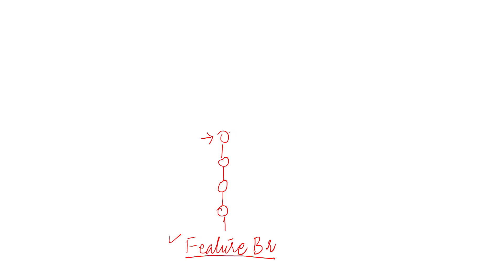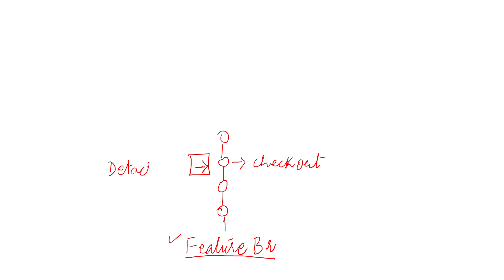Now, what is detached HEAD? For example, if we check out a specific older commit, the HEAD pointer will not be pointing to the latest commit — rather it will be pointing to the checked-out commit. This state, in which the HEAD pointer is not pointing to the latest commit, is called a detached head state.